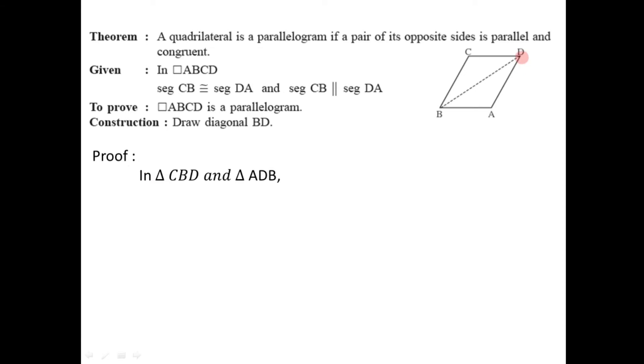By drawing diagonal BD we have got two triangles: triangle CBD and triangle ADB. So we have these two triangles due to the construction.